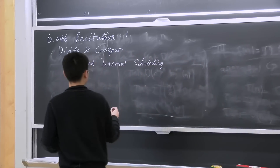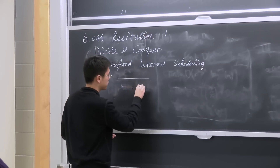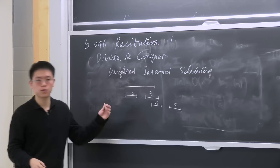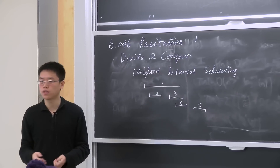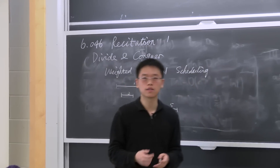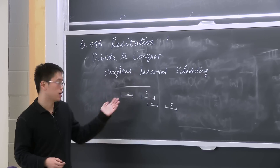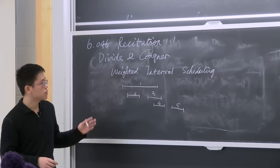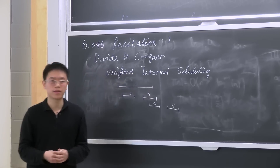Just to remind everyone what weighted interval scheduling is: in this problem, we are given a bunch of requests, each with a start time and a finish time. Our goal is to find a subset of them that are compatible — meaning they do not overlap — and that have the largest combined weight. An easier case is when the problem is unweighted, meaning every task has the same weight. In that case, we can solve it using a greedy algorithm. But when the problem becomes weighted, we have to use dynamic programming or recursion. Srini introduced a basic version in class — can someone remind us how that algorithm works?